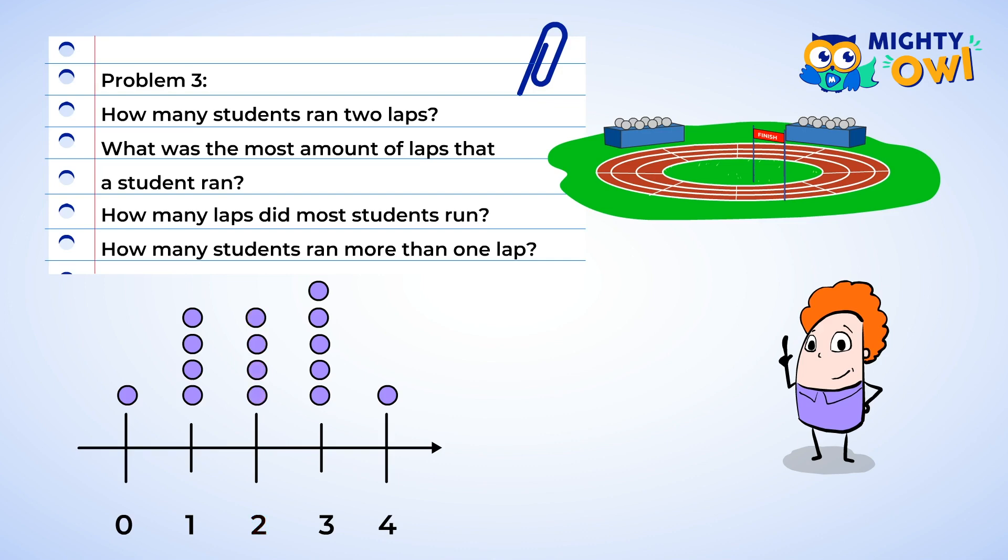The next question is about the most amount of laps ran in total. Well, our graph goes up to four. So that tells us that the most amount of laps ran is four laps. Woo! We are just running laps around these problems. Let's keep it going! Next we want to find out how many laps did most students run. Well, which number has the greatest amount of dots over it? Three has five dots. So most students ran three laps. And we're on to the last question already!